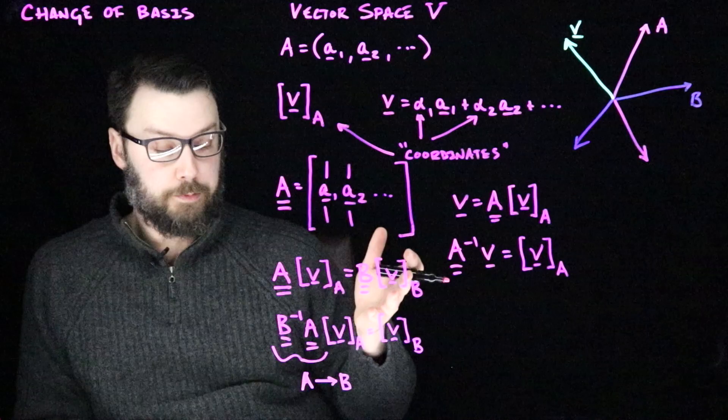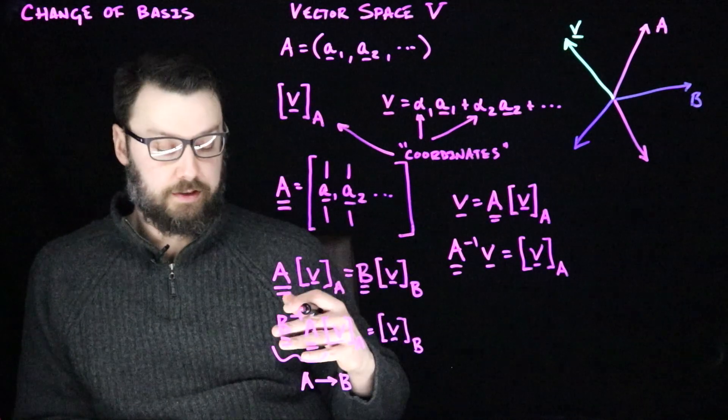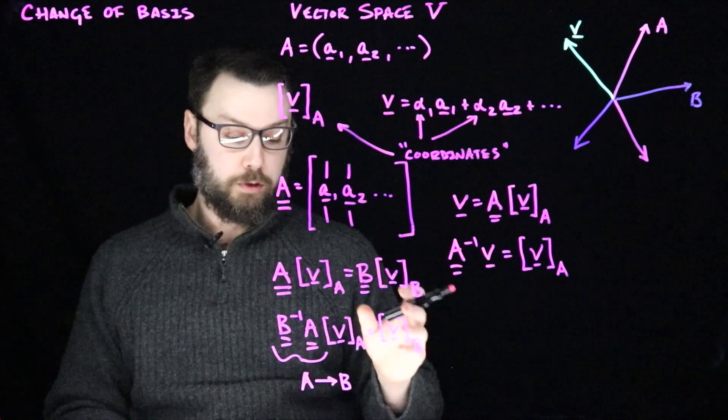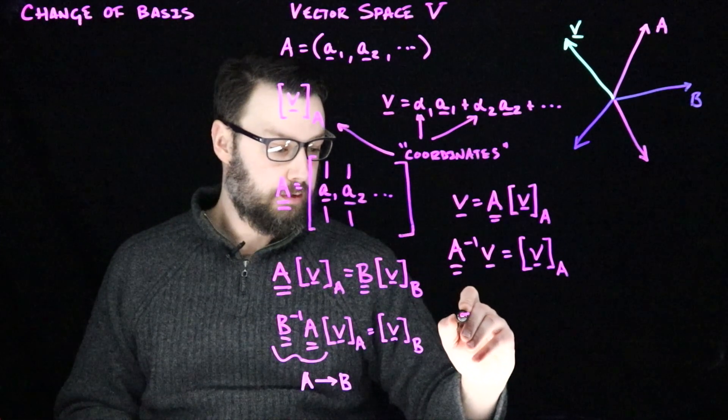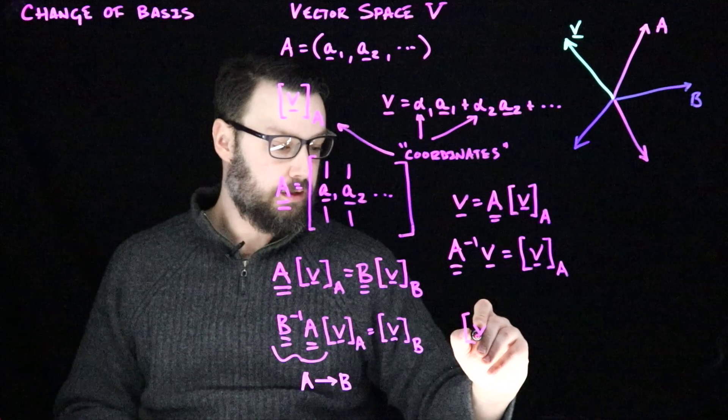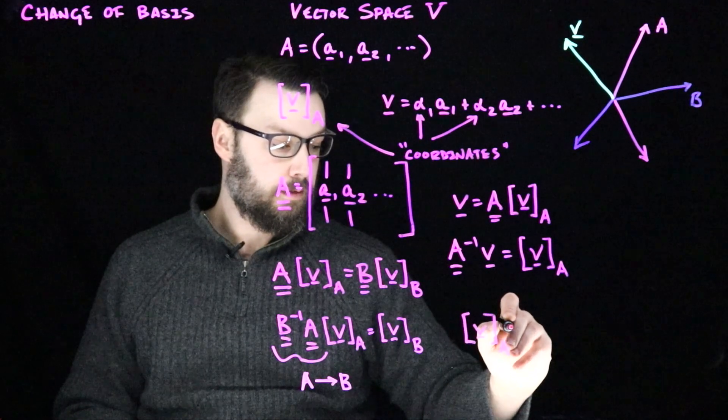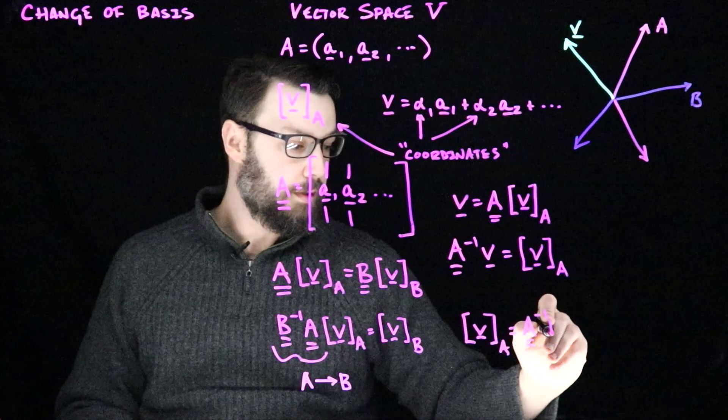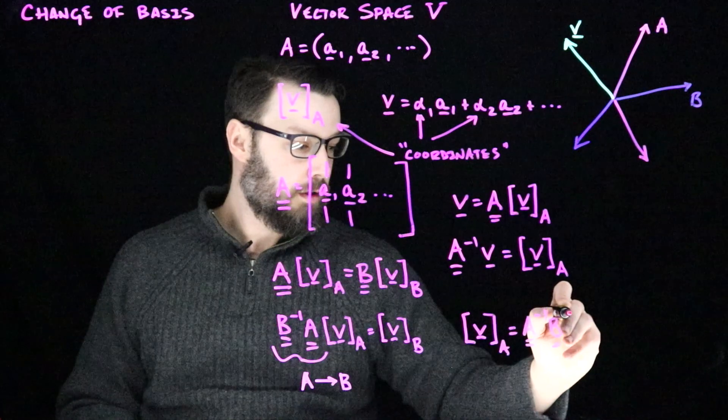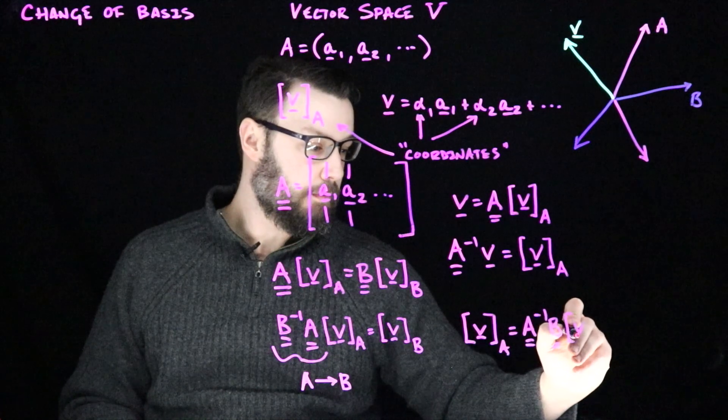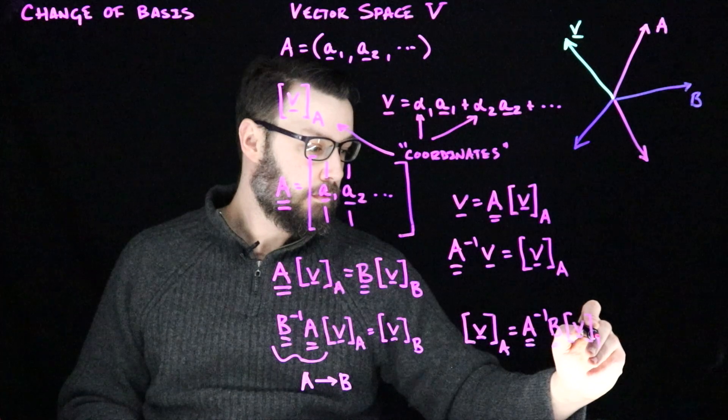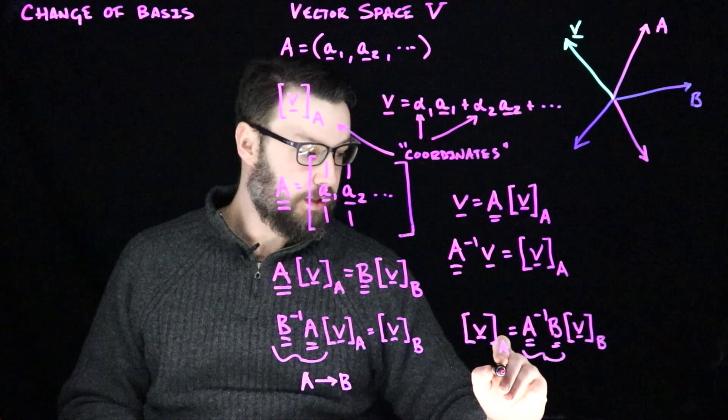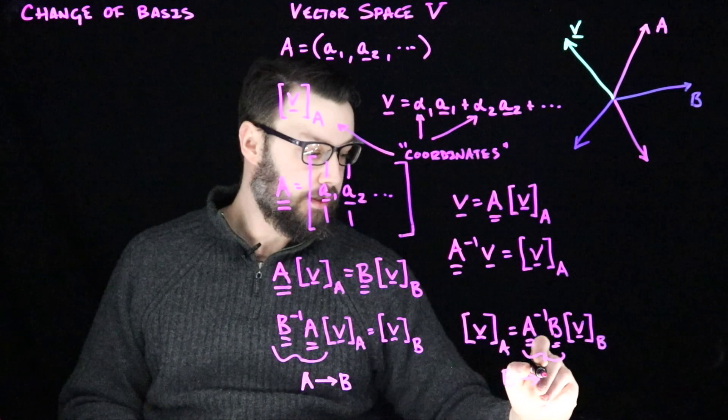Similarly, if we wanted to translate from the B basis into the A basis, so we had coordinates in B and we wanted to turn them into coordinates in A for the same vector, we could do it the other way around. And we would wind up with something that looked like V in the basis A is going to be A inverse B, and then the coordinates in B. This matrix would now be the one that translates from things in B into A.